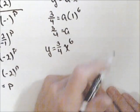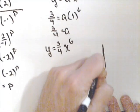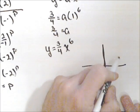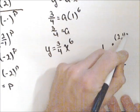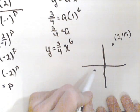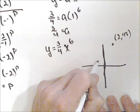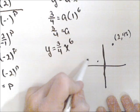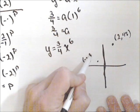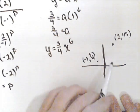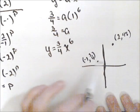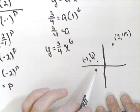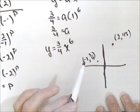Our power function goes through (2, 48) and (-1, 3/4). An interesting thing about power functions is if they're defined for both positive and negative values - if defined for all reals - then it has to be either even or odd.